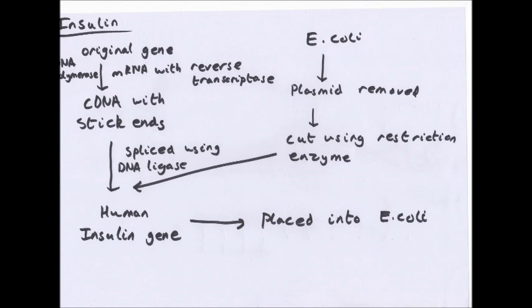You place it into E. coli and it will start taking up the plasmid and swapping it with others. You can also just leave the plasmids floating in the solution and they will be picked up. The bacteria are then grown on an agar plate where each bacterial cell grows to produce a mound of identical cloned cells called a colony.